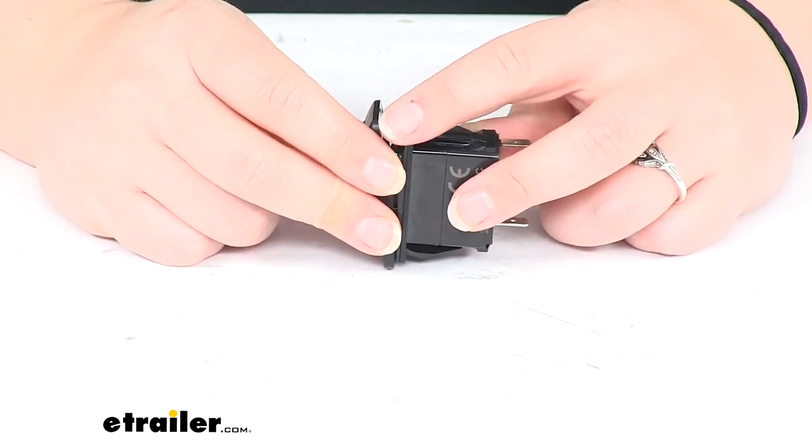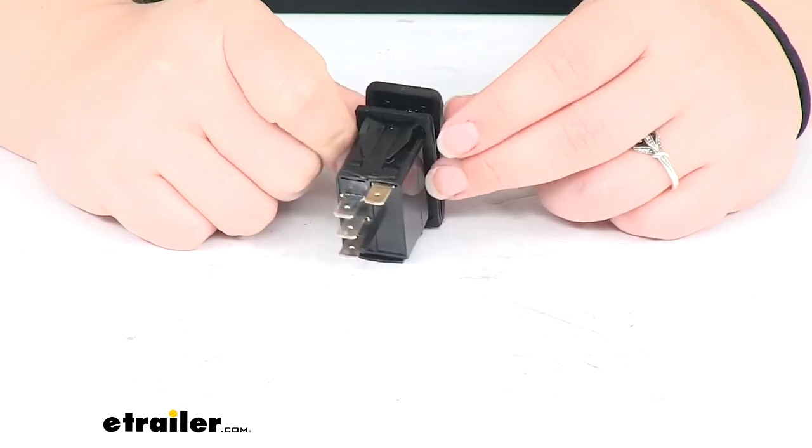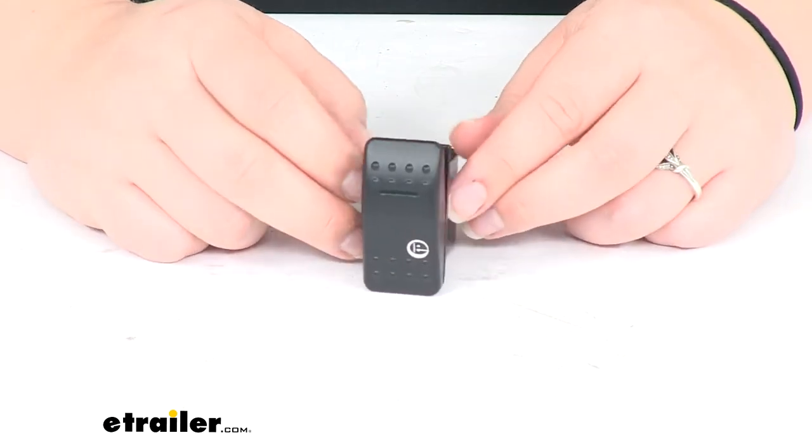It does also have the little rubber grommet there to provide some protection for the inner workings of your winch as well, so once you put that in place, it should hold nice and tight.